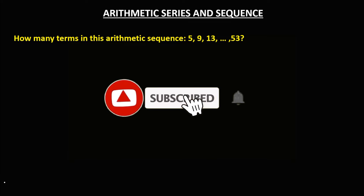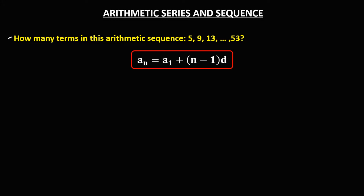Let's have this problem. How many terms are in this arithmetic sequence? Using the formula for the arithmetic sequence, a sub n is the last term. Since the last term is positive 53, and a sub 1, the first term, is positive 5.